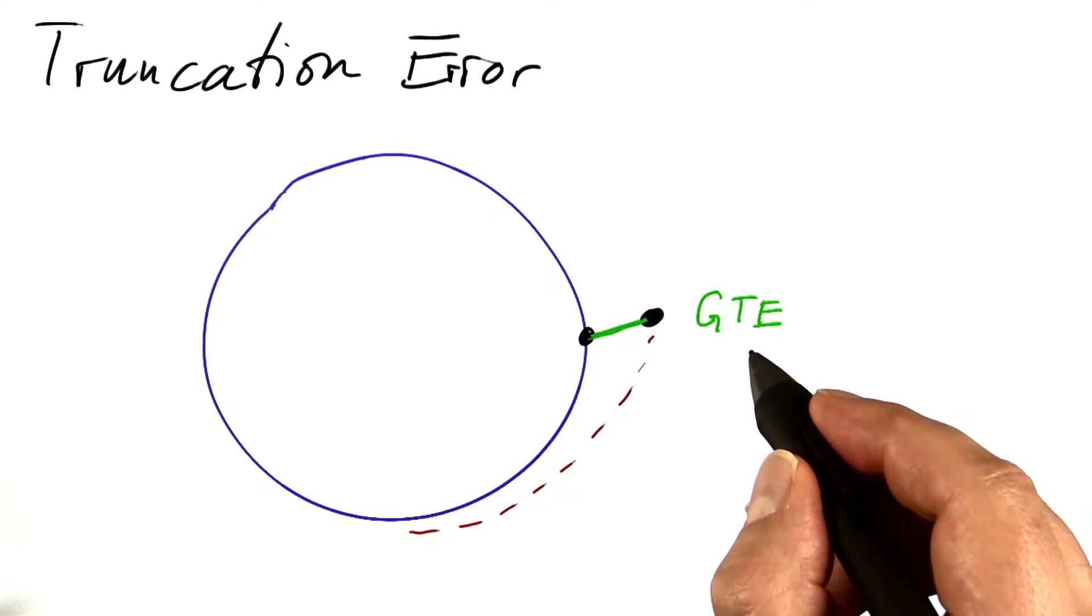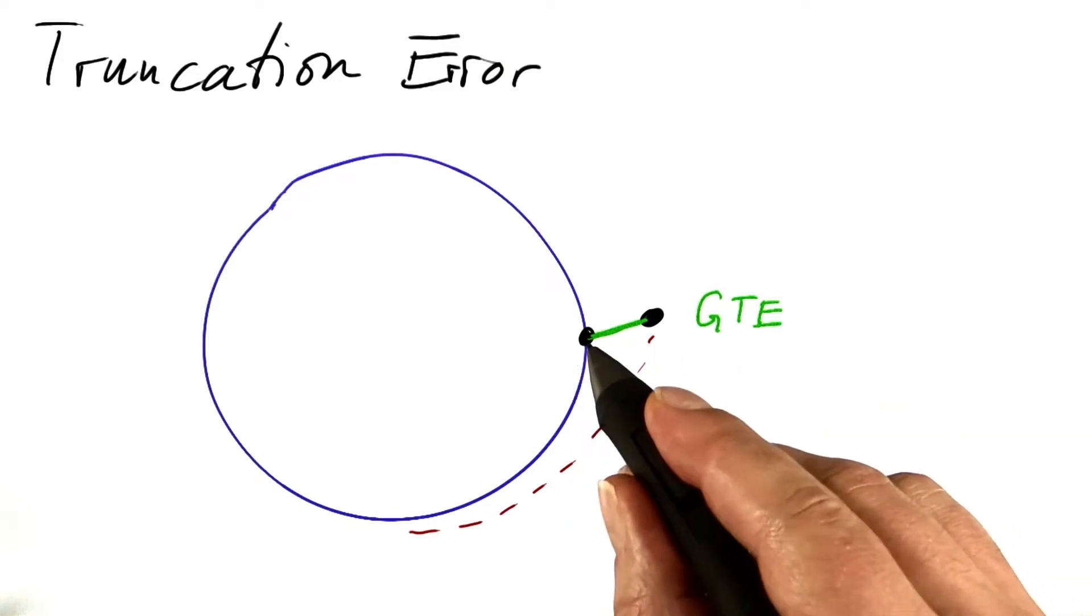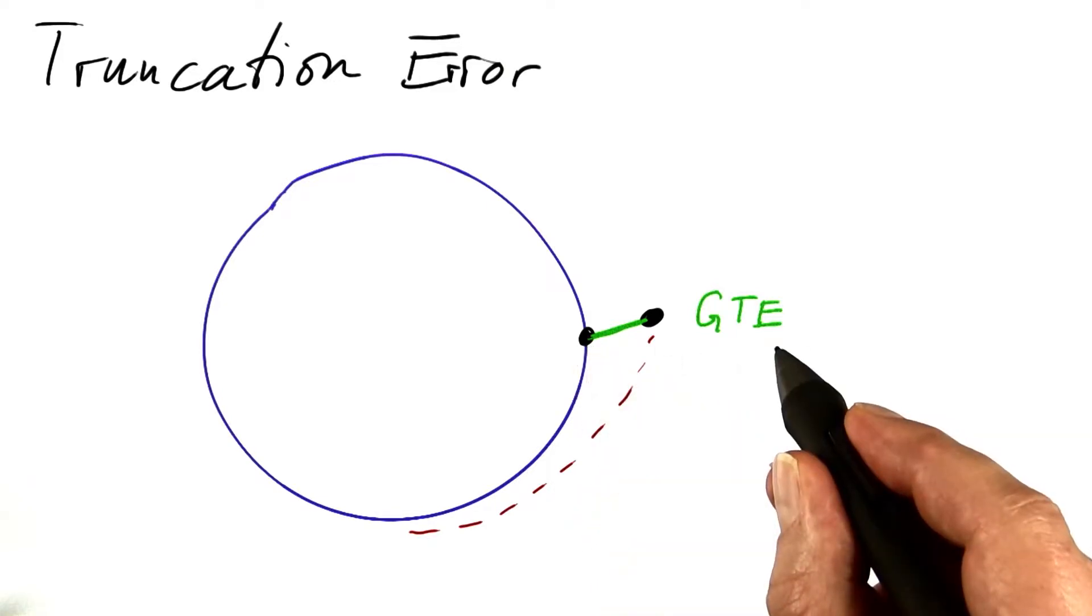If we would be using an infinitely small step size, we could theoretically achieve zero error. So that's part of the truncation, using a finite step size.